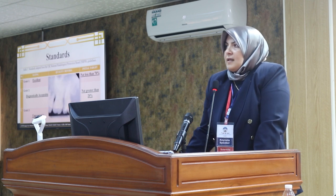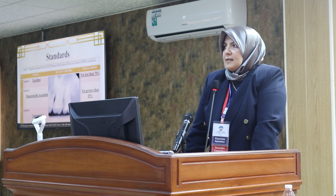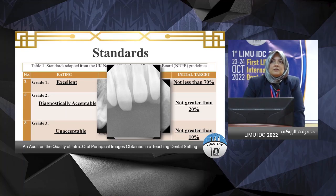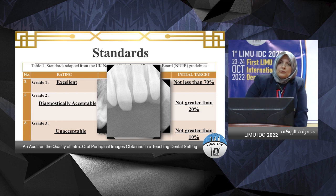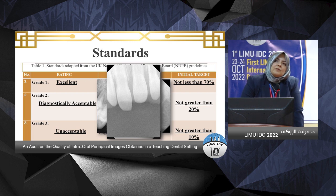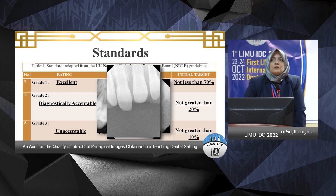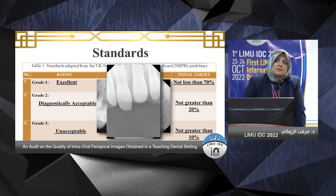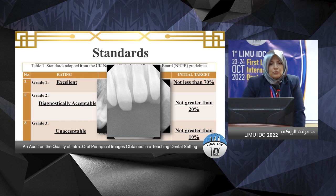Grade 1, the excellent, means a more or less ideal intraoral periapical image, with an initial target of no less than 70% of images. Grade 2, diagnostically acceptable, refers to images with few or some errors yet still usable for diagnosis, and these should not exceed 20%. Grade 3, the unacceptable, yields no diagnostic information and requires repeat exposure — against the ALADA principle — and should not exceed 10%.